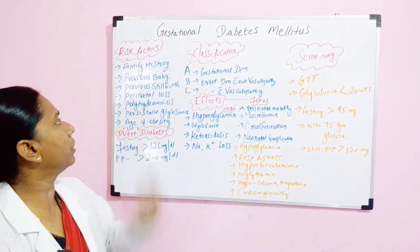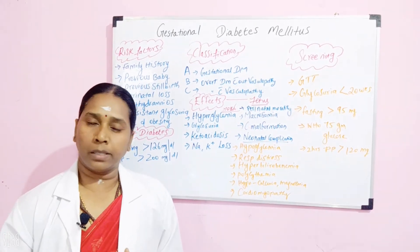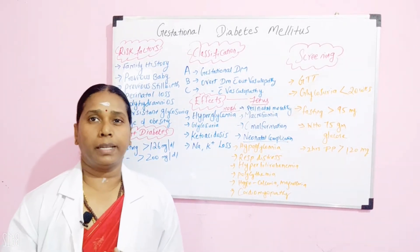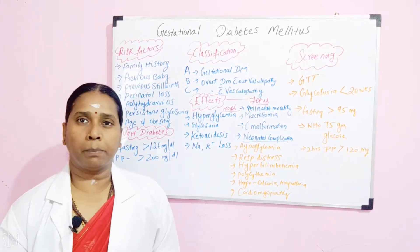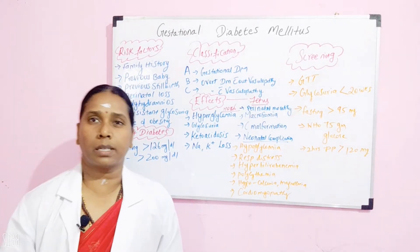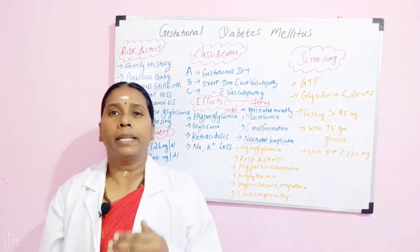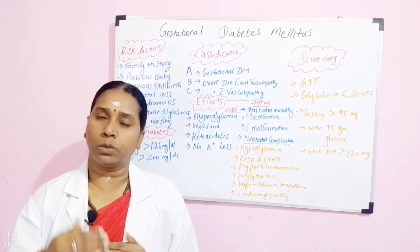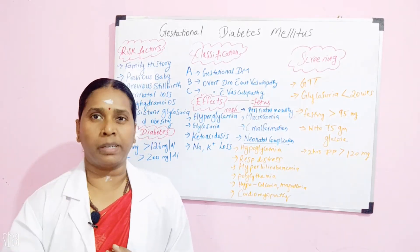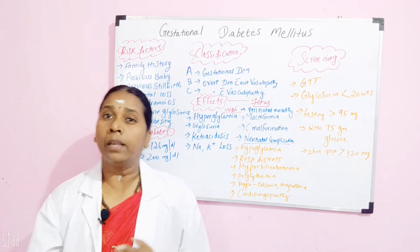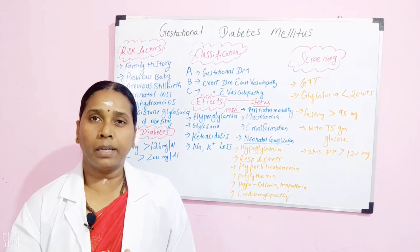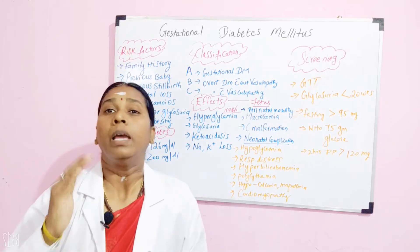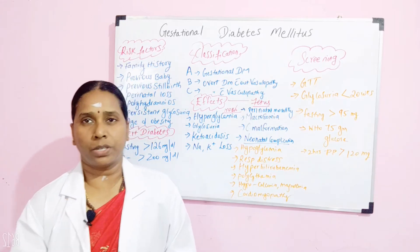The next condition is perinatal losses — when there is a death at the time of birth, you report it as a perinatal loss. When there is a perinatal loss, you can also suspect gestational diabetes. Another risk factor is polyhydramnios: when the mother has polyhydramnios, the fluid level is more. Just as diabetes causes increased thirst and hunger, similarly the mother may have an increased amount of fluid, indicating possible gestational diabetes.